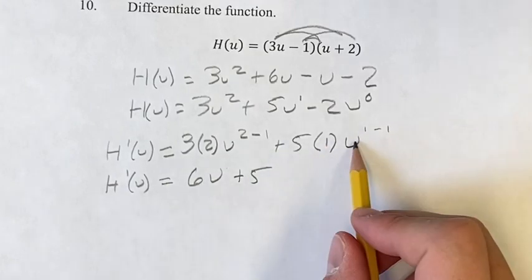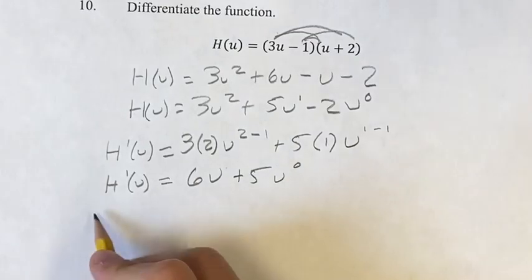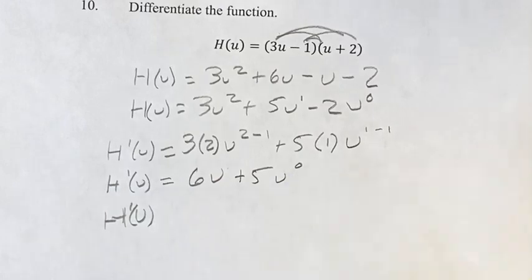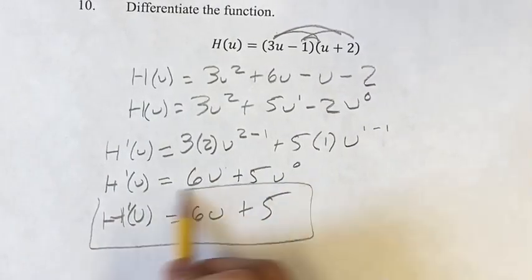5 times 1 is 5. u to the 1 minus 1 is u to the 0. u to the 0 is, of course, 1, since anything to the 0 is just 1. So you have 6u plus 5 times 1 is just 5, and this is going to be your final answer.